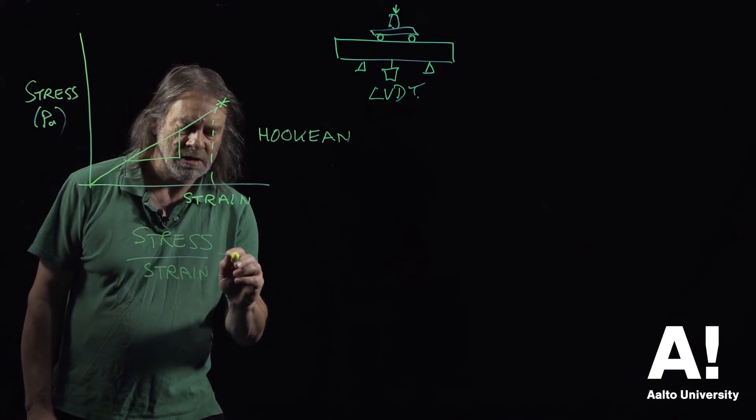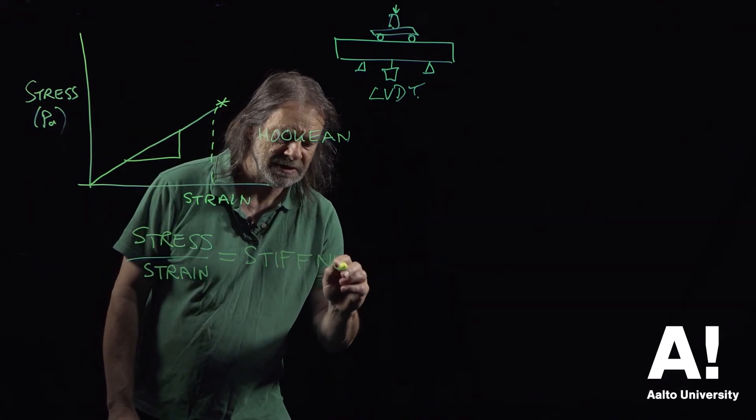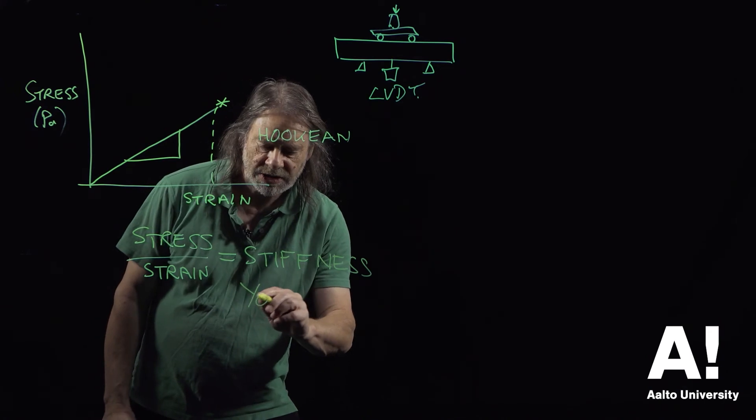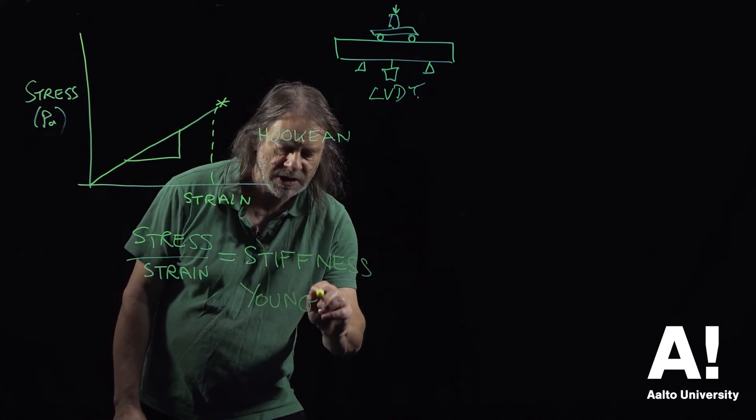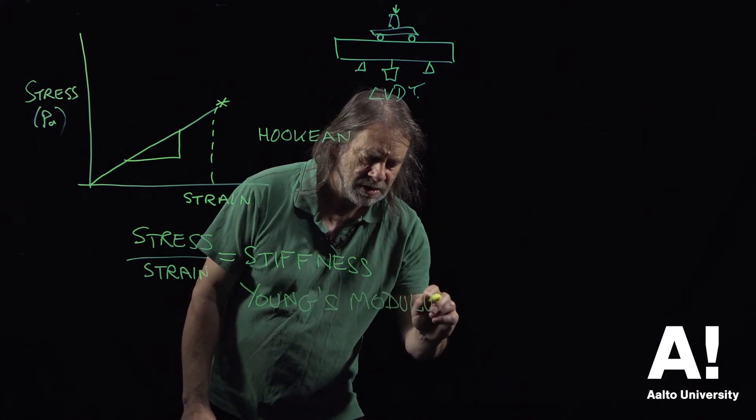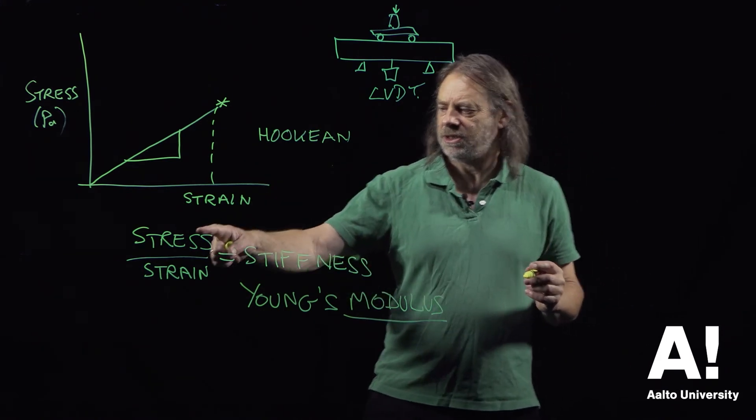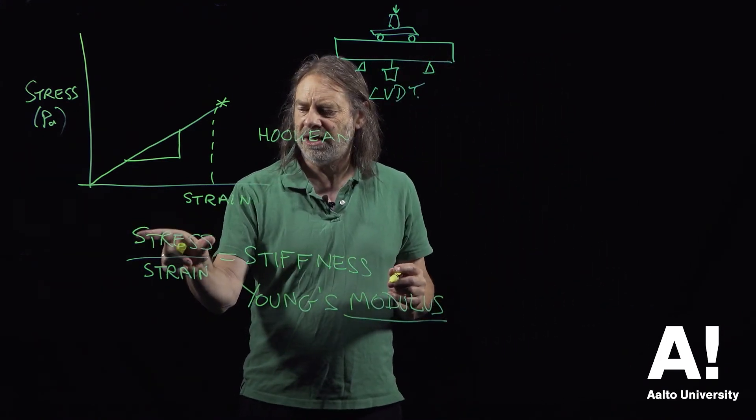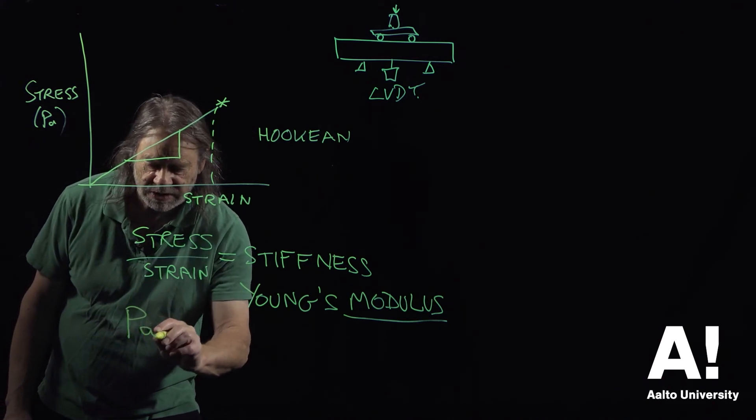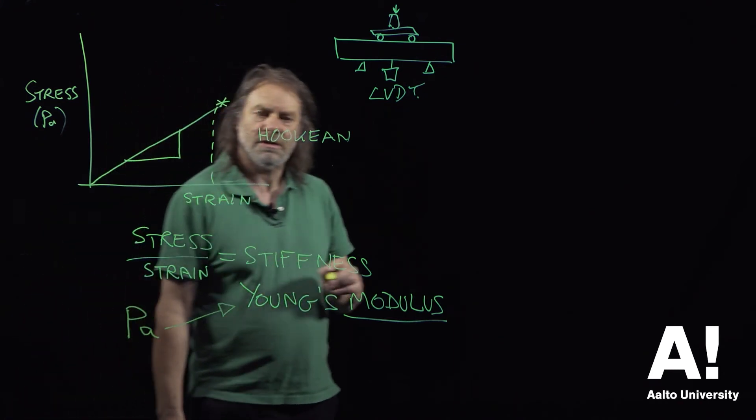Stiffness isn't a terribly scientific word, so we actually define it by something called Young's modulus, or sometimes we just call it modulus. The units of modulus are going to be Pascal over strain, and because strain doesn't have a unit, the units of Young's modulus are the same as the units of the applied load: Pascal.